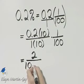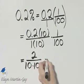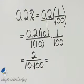In the denominator I have ten times one hundred. And notice there is a common factor of two in the numerator and the denominator.